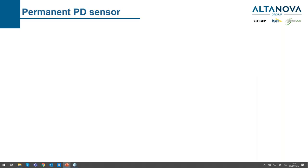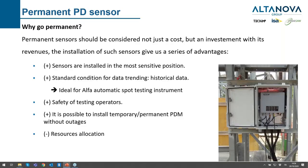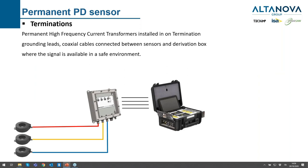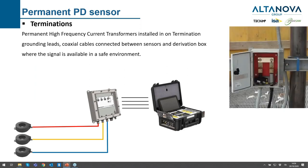On terminations we can place a high-frequency current transformer (HFCT). We have a schematic drawing on the left and a related picture on the right, where you can see the HFCT placed in the link box of the single cable termination.